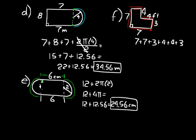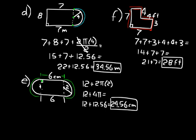For the last side, we know the vertical side on the right is 4 and the total vertical length is 7, so that missing side must be 3. Now we have all sides. Perimeter is the measure around the object, so let's add in pairs: 7 plus 7 is 14, plus 3 plus 4 is 7, plus another 4 plus 3 is 7. Fourteen plus seven is 21, plus 7 is 28 feet. Remember to find missing sides first, then add all sides together. That's all for lesson three.